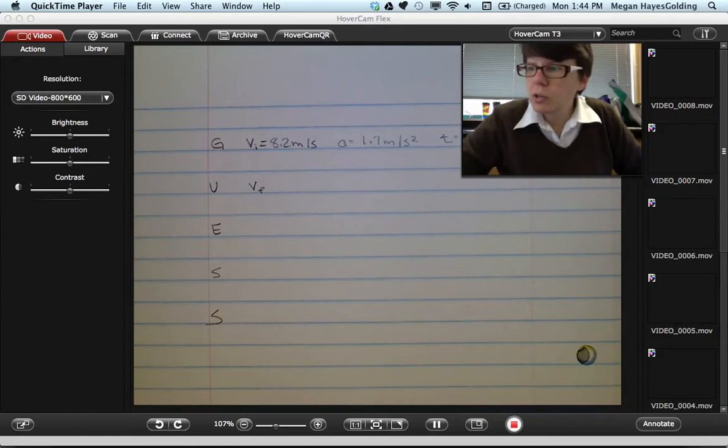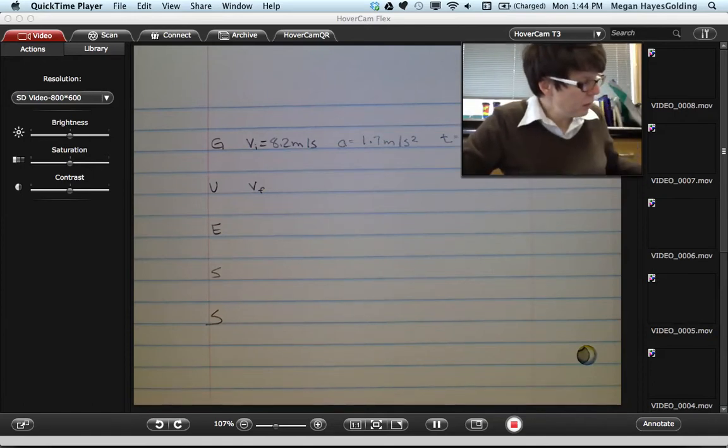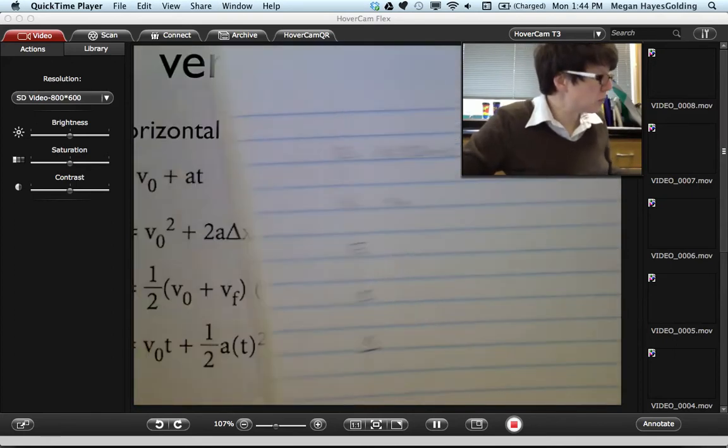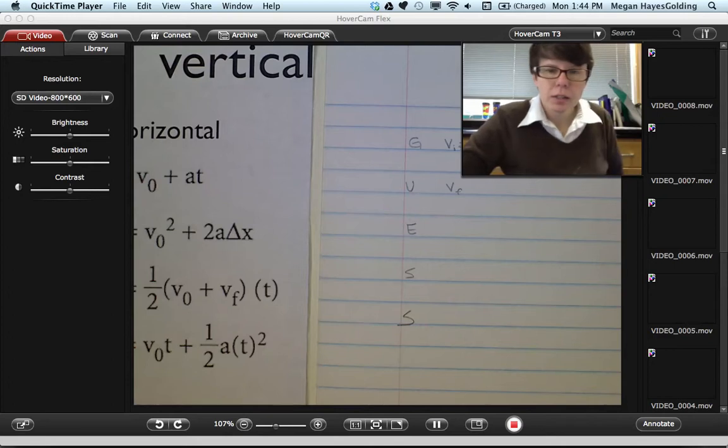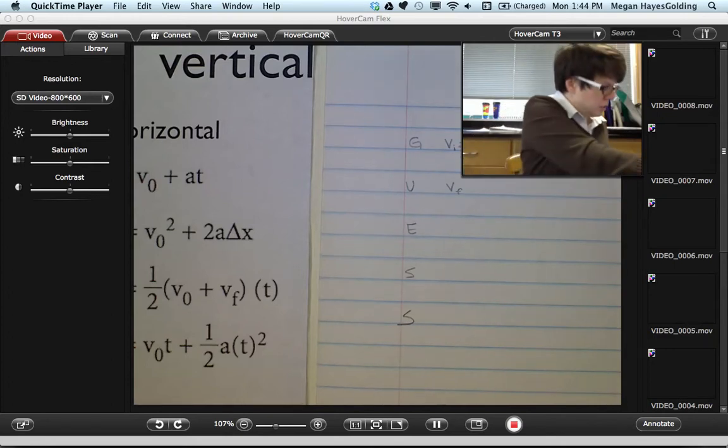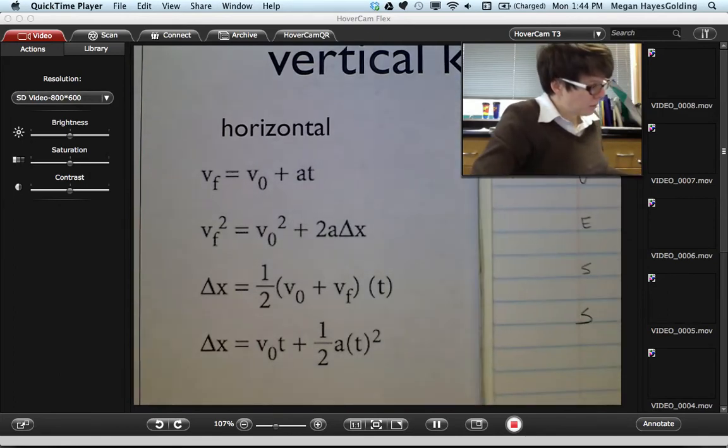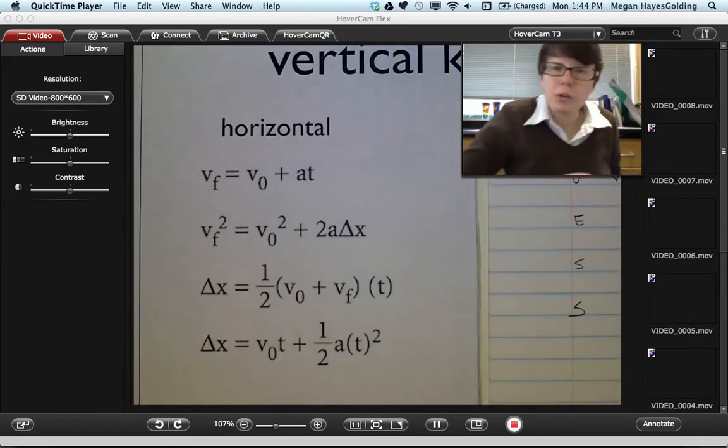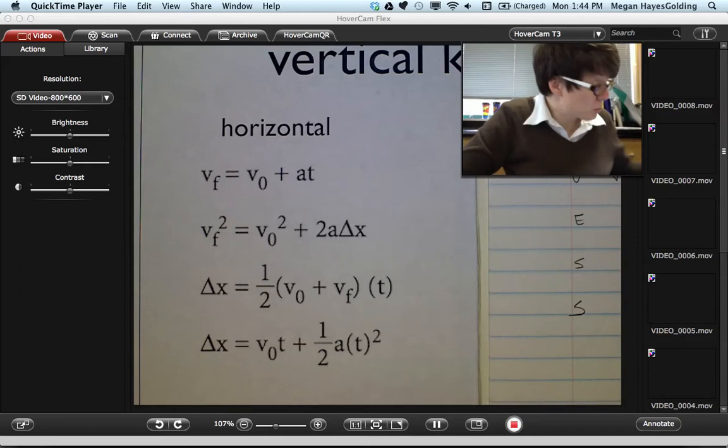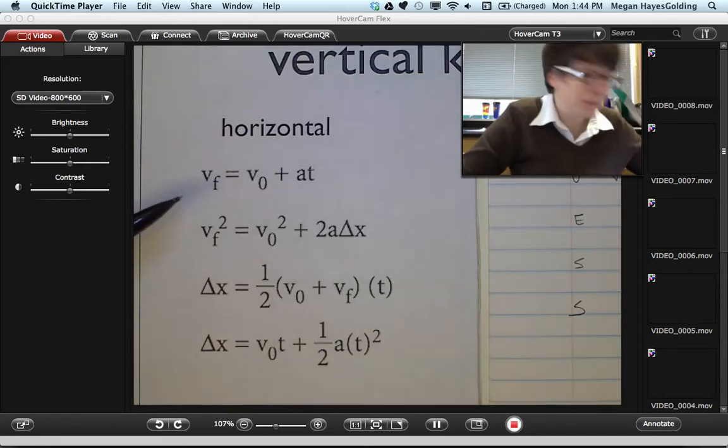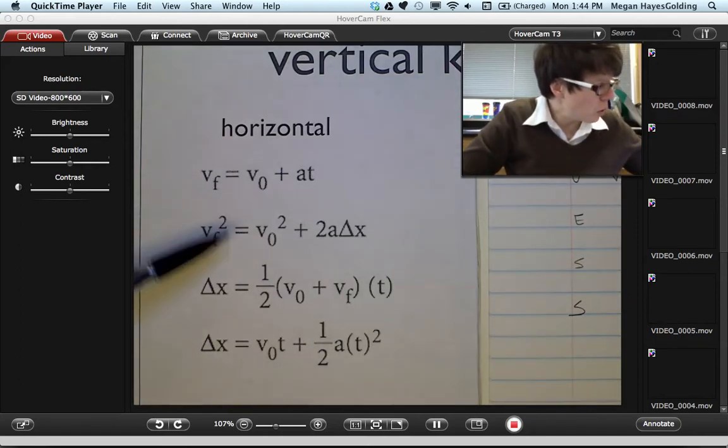Round your answer to one decimal place and don't include units in the answer. I need a relationship that gets at velocity, acceleration, and time and allows me to find a final velocity. The only value that I know nothing about in the setup for this problem is position, the x variable. So all those equations are out.